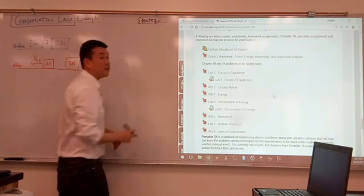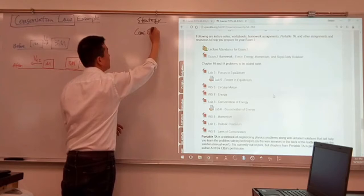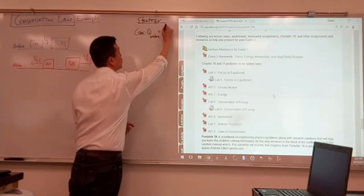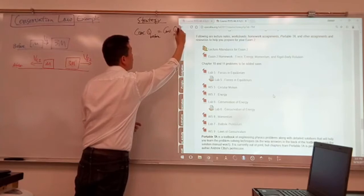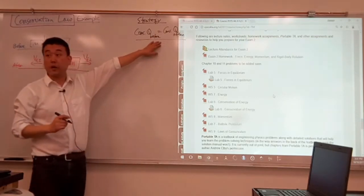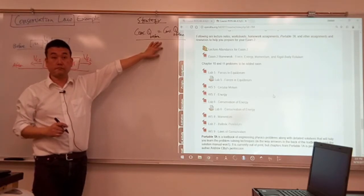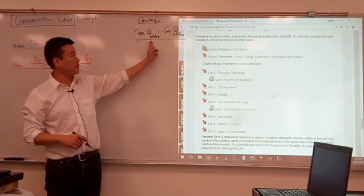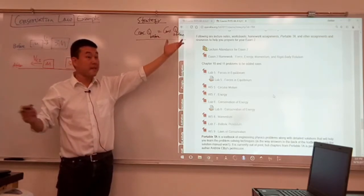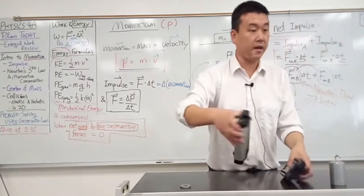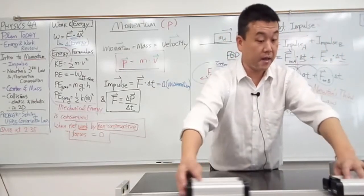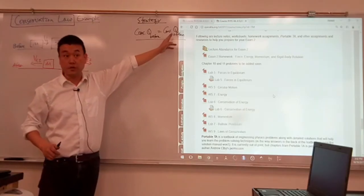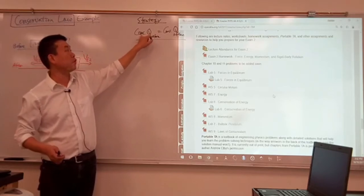You find some conserved quantity and you say conserved quantity at some point before is equal to conserved quantity at some point after. What justifies writing down this equation? Why can I say that whatever this quantity is that I'm looking at, that before the interaction, it's the same quantity after the interaction? That's not true of every quantity. If you are looking at velocity of these carts, then in the interaction, their velocities clearly change. So you couldn't say velocity before the collision is equal to velocity after the collision.